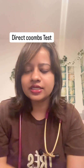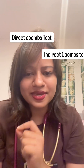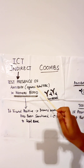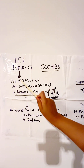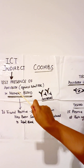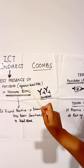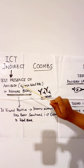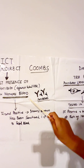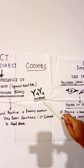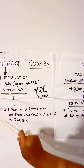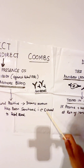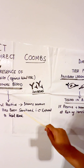Have you also been confused about DCT and ICT? ICT stands for Indirect Coombs Test. In this test, we are checking the presence of antibodies against fetal RBCs in the mother's blood. That's why we always send the mother's blood for ICT — because we want to test for antibodies in her blood. If ICT is positive, it means the mother has been sensitized.